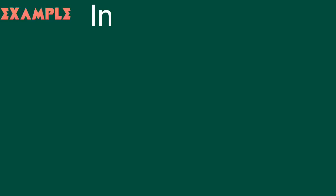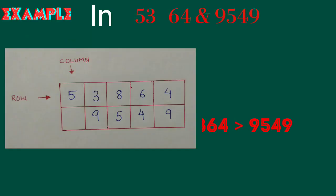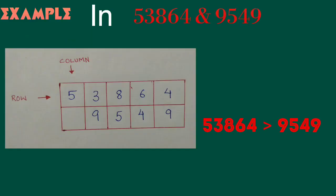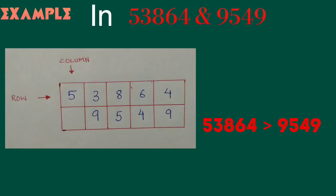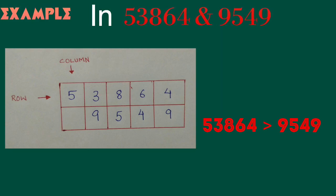In this example, the first number has a place value up to 10,000, so it is greater than the second number, which has a place value up to 1,000.